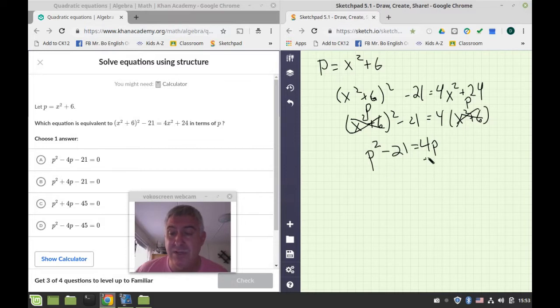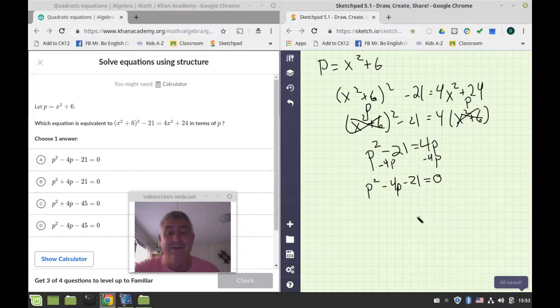So after we get rid of this and make this substitution, we end up with a different equation. I'm going to subtract 4p from both sides, and I'm going to end up with p squared minus 4p minus 21 is equal to zero, and this looks a lot like everything we've been doing for the last 15 videos, except we've got p instead of x or t. So we're going to solve it by factoring. So I want something that multiplies out to be negative 21 that adds to be negative 4. I have 3 times negative 7, and that adds up to be negative 4.